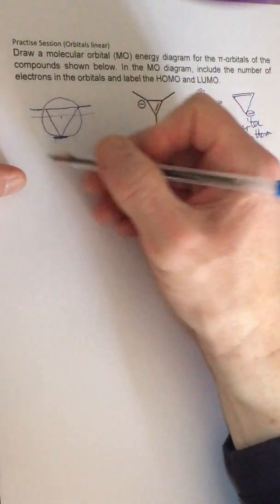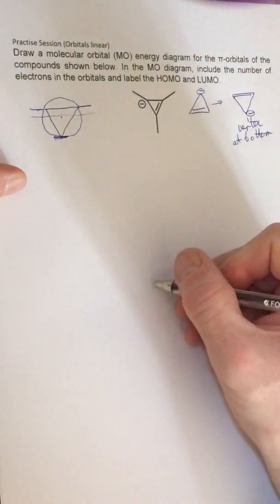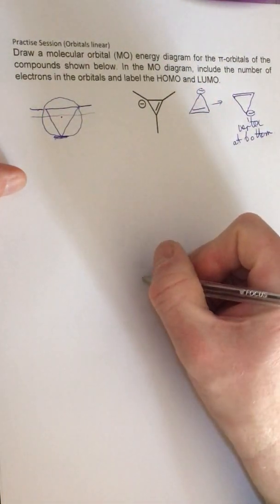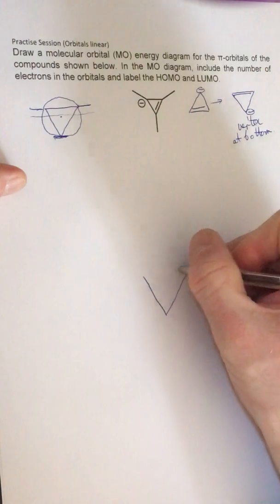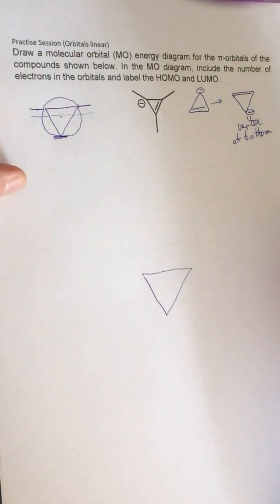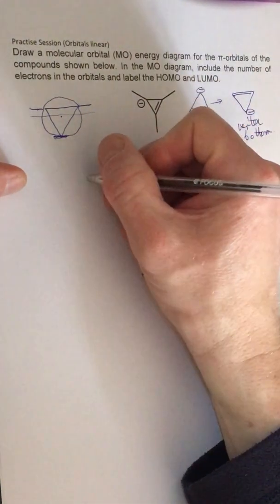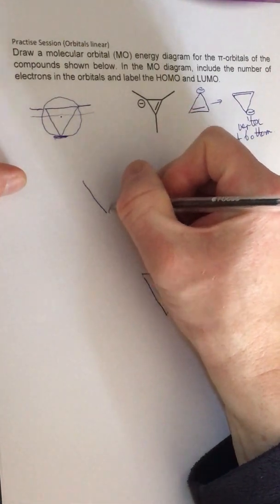All right, so now we know the layout of the orbitals, so we can just draw a triangle here. That's going to be one orbital, and then above it there's going to be two other orbitals.